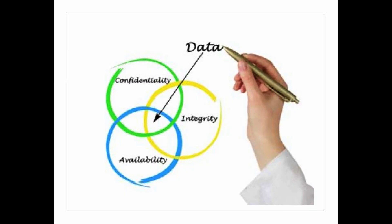Data sits in the middle of three circles — it's like a Venn diagram. Confidentiality: you don't want your data getting out to other people. Integrity: can we rely on the data? Is it integral and is it available to review? That availability is often a big problem.